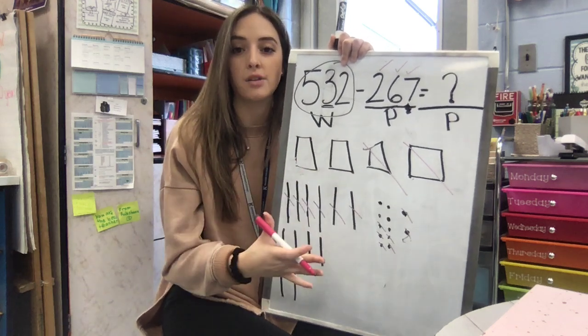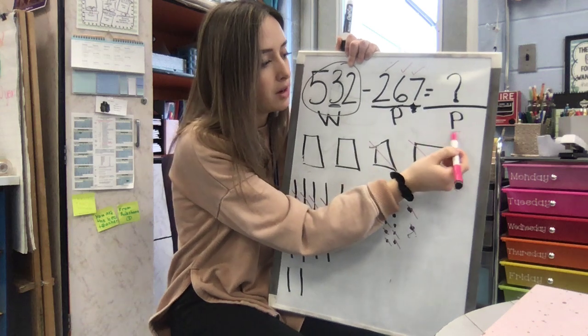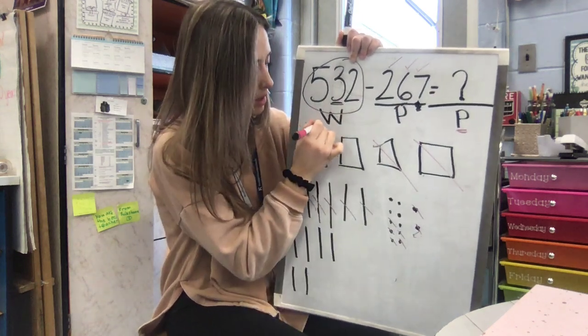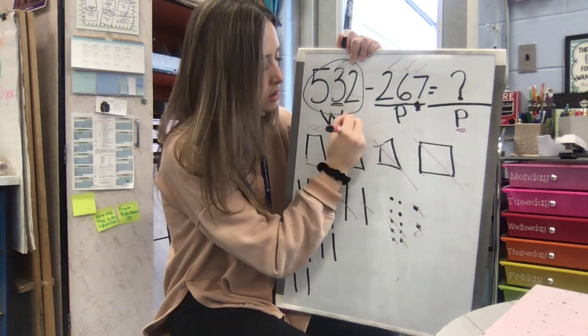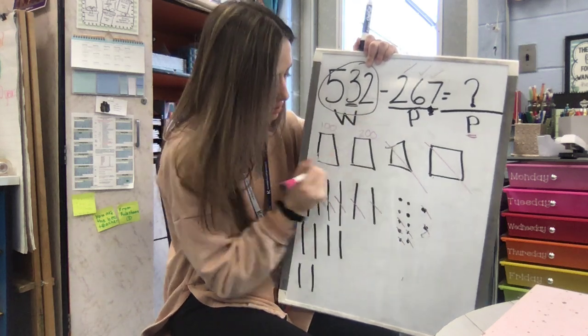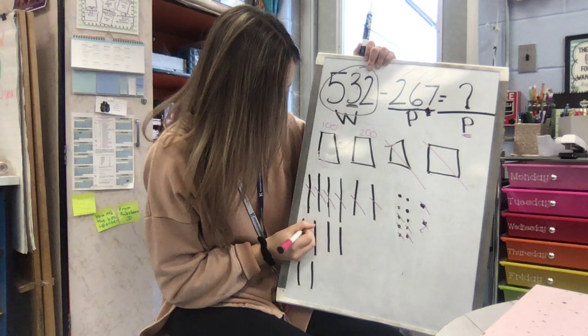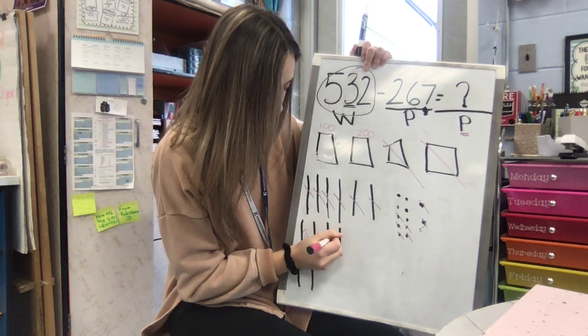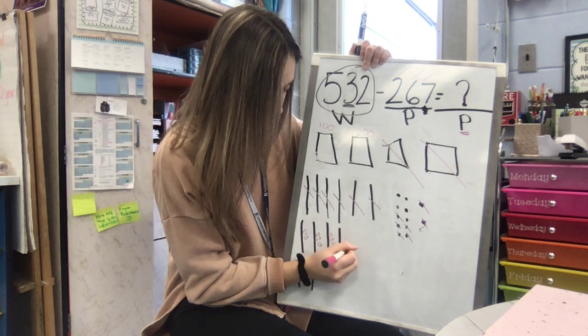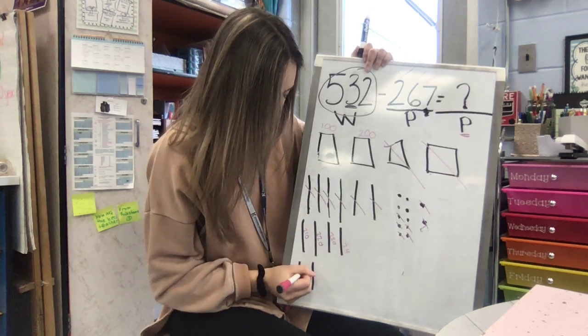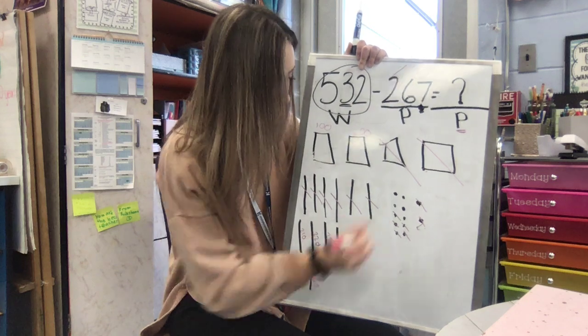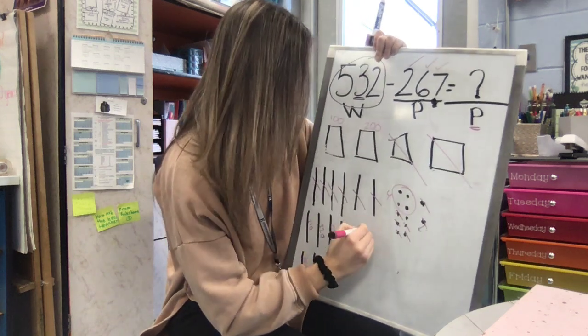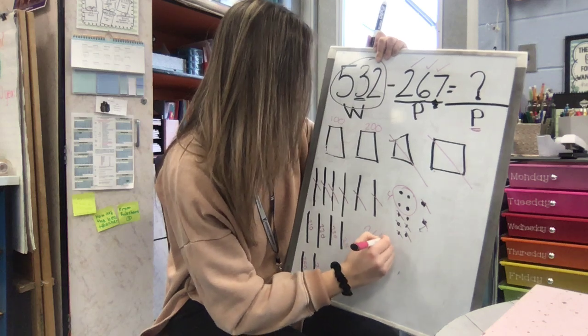Now I need to count what I have left. Count what's not crossed out to find my missing part, right? I need to count to find my missing part. So do that with me. 100, 200, 210, 220, 230, 240, 250, 260. And this is 4. So we have 264.